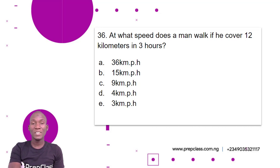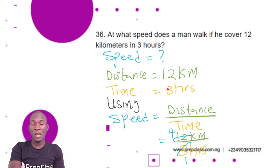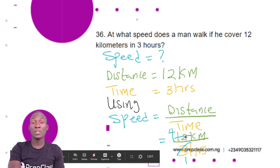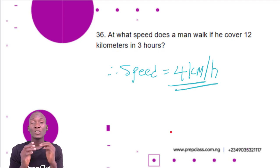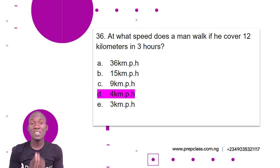We need to solve for speed given the distance and the time. Speed is unknown — that's what we have to find. We have the distance which is 12 km and the time which is 3 hours. We are going to use the formula: speed equals distance over time. We have the distance as 12 km and the time as 3 hours. 3 in 12 is 4. So we have 4 km per hour as the speed of the man who walked 12 km in 3 hours. Option D is the correct answer — 4 km per hour.